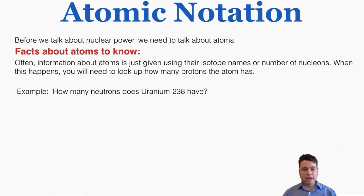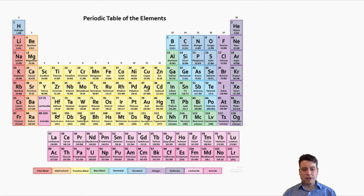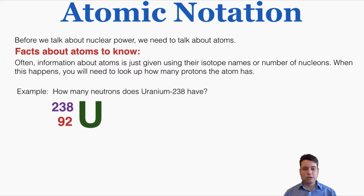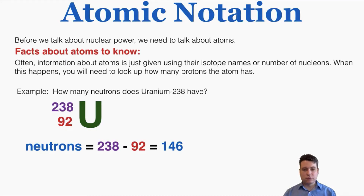As an example, how many neutrons does uranium-238 have? Uranium's symbol is U, so we write a uranium atom with 238 nucleons on the top left. Looking at the periodic table, uranium has 92 protons — that's the bottom left number. So the number of neutrons is 238 minus 92, which equals 146. There are 146 neutrons in this uranium atom.